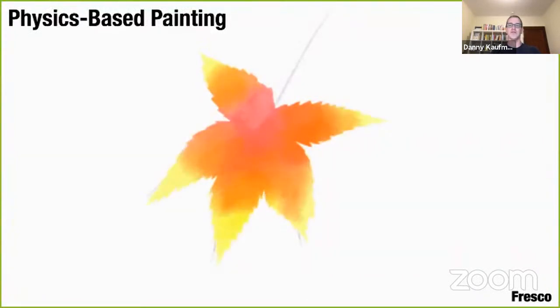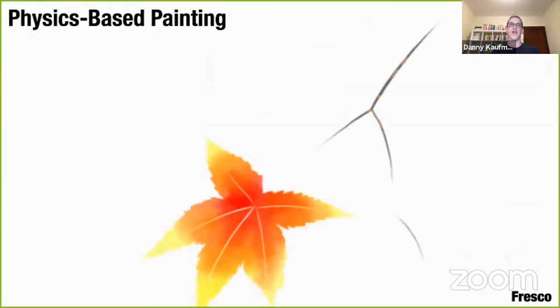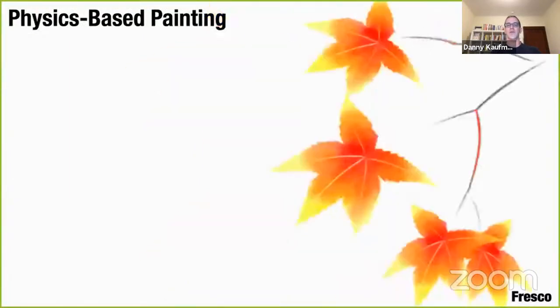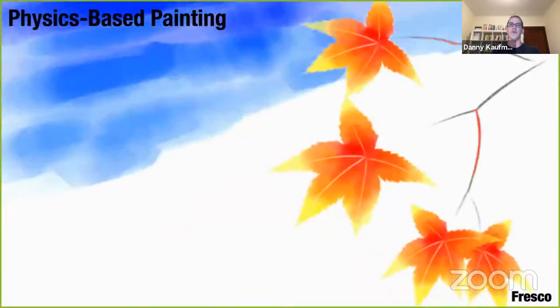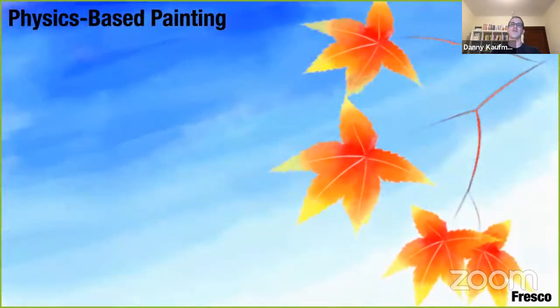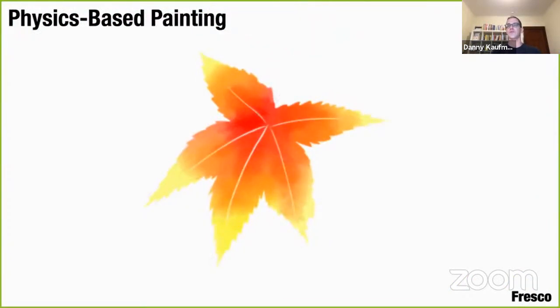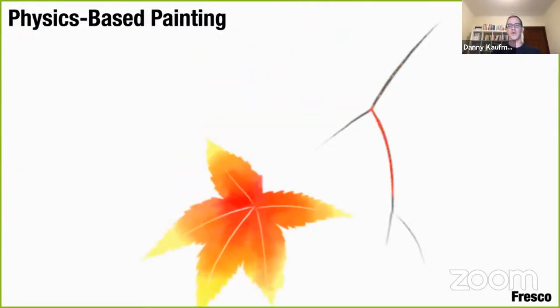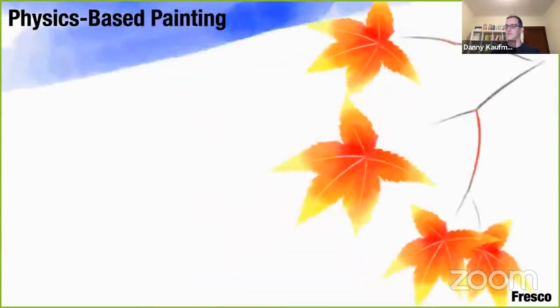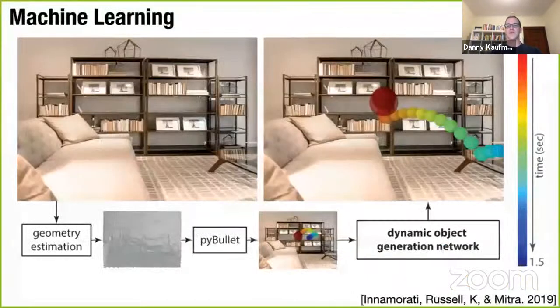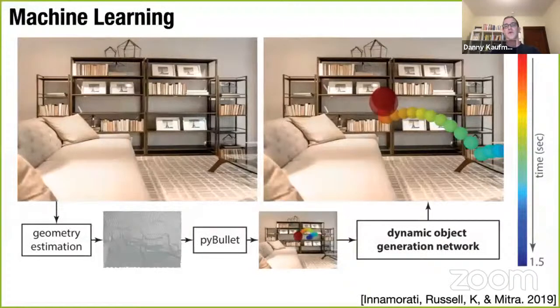And of course, there's physically based paint simulation, for instance, in Fresco. And here, the idea is essentially the physical flow and mixing of paints that's so natural and beautiful can be nicely combined with the precision and ability of digital tools. So very similar to the kind of physics-based manipulation that I showed you earlier, we want to essentially combine these nice affordances of physics with digital precision and get the best of both worlds.